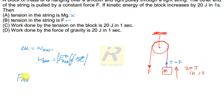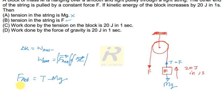What is the net force on this block? There are two forces: one is the gravitational force acting downward which is Mg, and the upward force is the tension T. Since this block is rising up, the tension is more than the weight. Therefore, net force equals T minus Mg. If I multiply both sides by displacement X, I get: net force into displacement equals tension into displacement minus Mg into displacement.